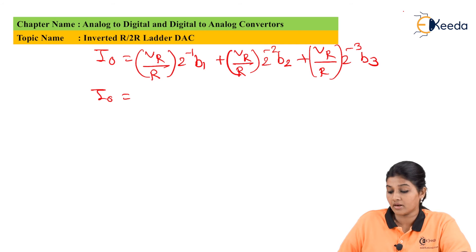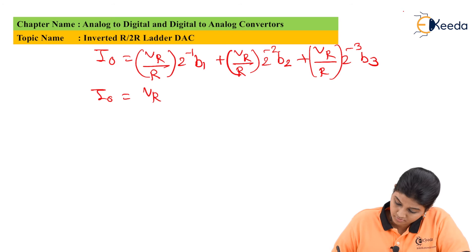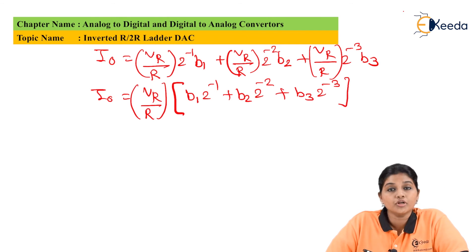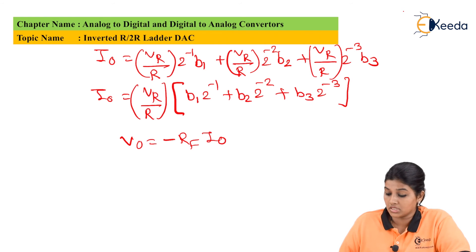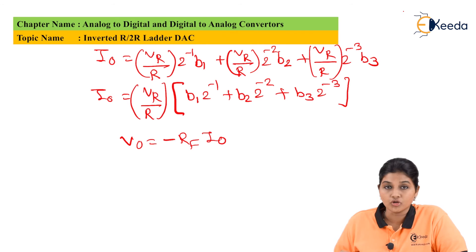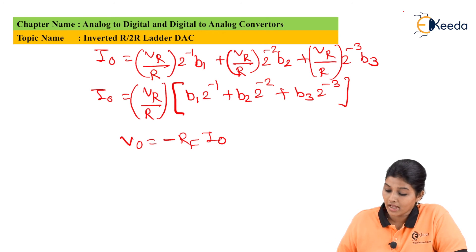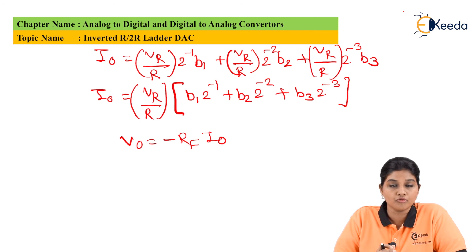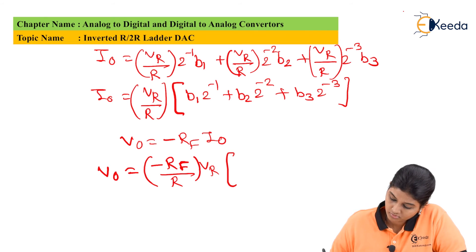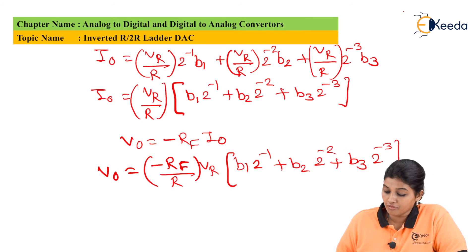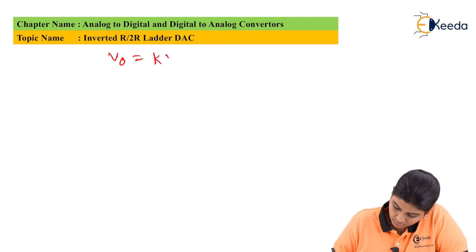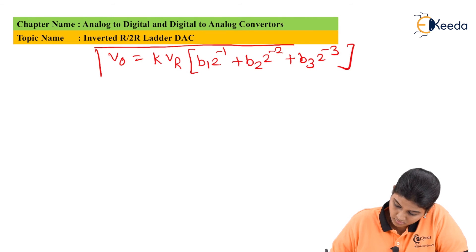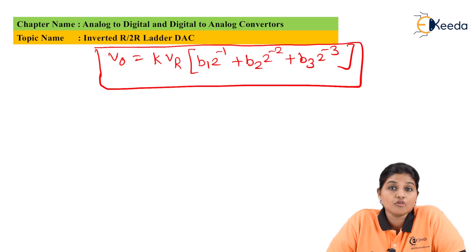In the equation, the term Vr over R is present in each term, so we can take it as common. The output voltage equation is obtained using the formula V0 equals minus Rf times I0. The negative sign indicates that the input is applied to the inverting terminal of the op-amp. Substituting the value of I0, we get the final output equation. The term minus Rf over R can be replaced by a constant k, so the final output equation becomes V0 equals k times the weighted sum of the digital input bits.